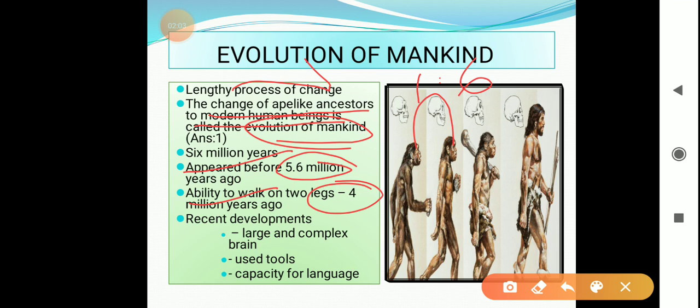Other important human characteristics or capacities are complex brain, ability to make and use tools, and capacity for languages. These are developed more recently.